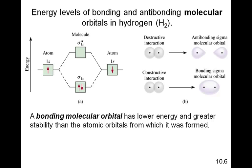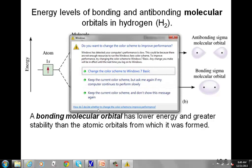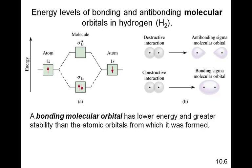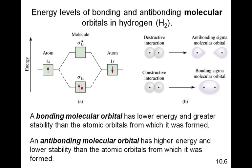The bonding molecular orbital has lower energy and greater stability than the anti-bonding molecular orbital. The anti-bonding molecular orbital has higher energy and lower stability than the atomic orbitals from which it was formed, while the bonding molecular orbital has lower energy and greater stability than the atomic orbitals from which it was formed. In the diagram, we see that the bonding sigma molecular orbital has lower energy than the 1s of either atom, and both electrons from the 1s go into the bonding sigma orbital — which shows a stable molecule.